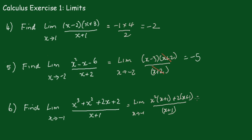Which then further factorizes to (x² + 2)(x + 1) over (x + 1). Now those x + 1's will cancel. Putting the -1 in here, (-1)² is 1, and 1 + 2 equals 3 as your limit.